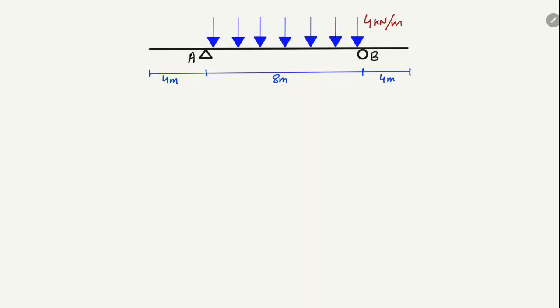This is an overhanging beam with a length of 4 meters of overhang, then an 8-meter simply supported part, and again 4 meters without any load. So this 4-meter and this 4-meter is the overhanging portion of the beam. There is a uniformly distributed load of 4 kilonewton per meter acting only on the length of 8 meters.